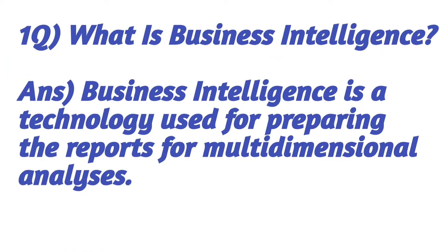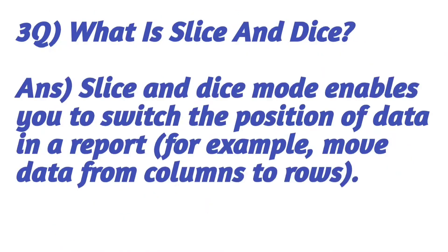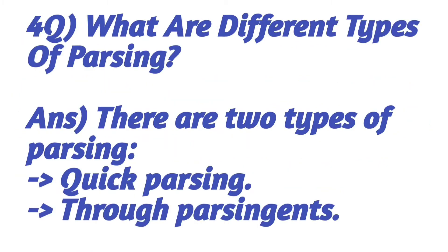What is business intelligence? Business intelligence is a technology used for preparing reports for multi-dimensional analysis. What are the different multi-dimensional analysis methods available in Business Objects? There are two multi-dimensional analysis methods available in BO: slice and dice, and drill down. Slice and dice mode enables you to switch the position of data in a report — for example, you can move the data from columns to rows.